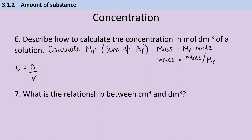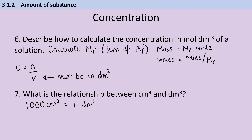This then allows me to work out that concentration is the number of moles, represented by n, divided by the volume. The volume must be in decimetres cubed, and it's often given in centimetres cubed. The relationship between them is that there are 1000 centimetres cubed in one decimetre cubed. Therefore, to convert, you divide by 1000 to convert centimetres cubed to decimetres cubed, or multiply by 1000 to go back the other way.